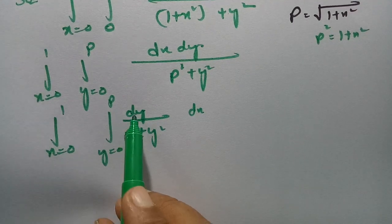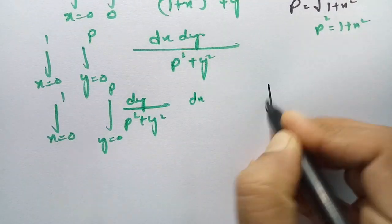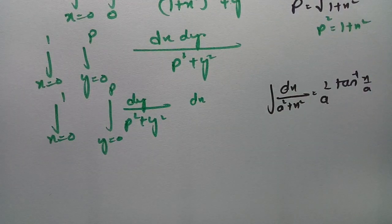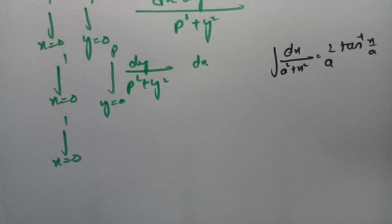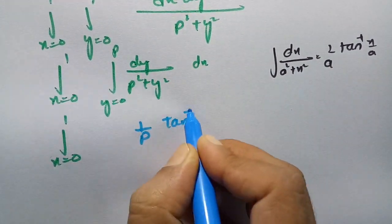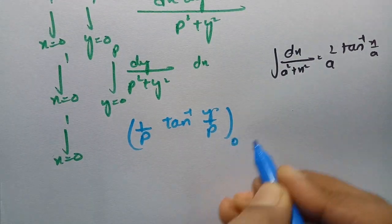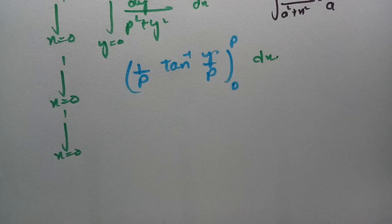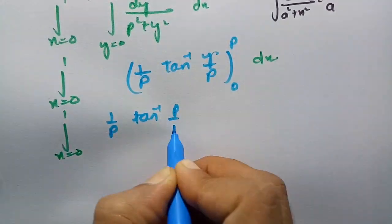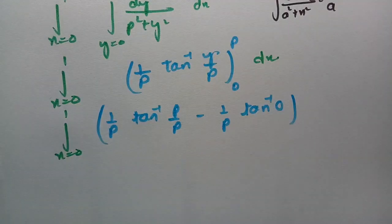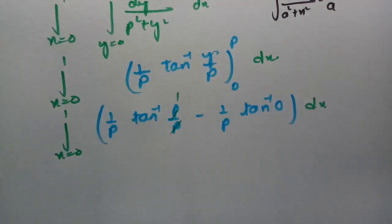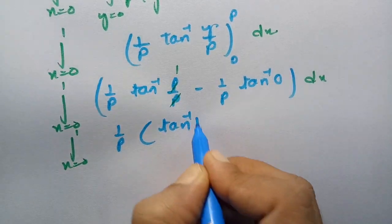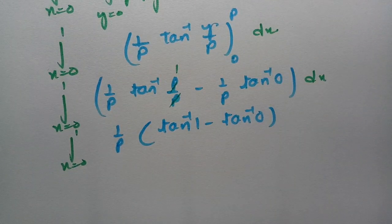Using the formula integral of dx by a square plus x square equals 1 by a times tan inverse of x by a, the integral of dy by p square plus y square is 1 by p times tan inverse of y by p, evaluated between limits 0 to p. Substituting gives 1 by p times tan inverse of p by p minus 1 by p times tan inverse of 0. Simplifying, p by p cancels to 1, so this becomes 1 by p times tan inverse of 1 minus tan inverse of 0.